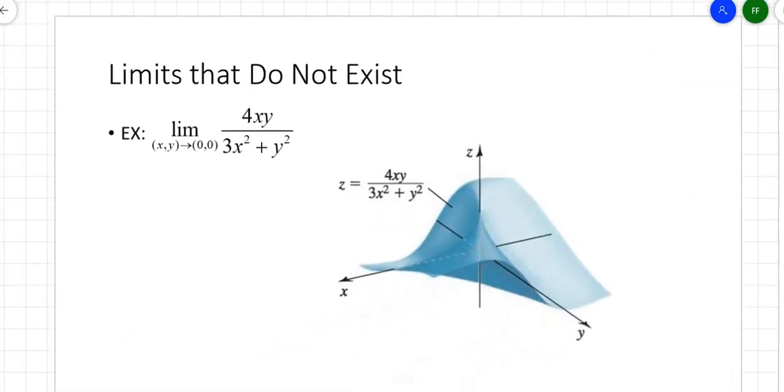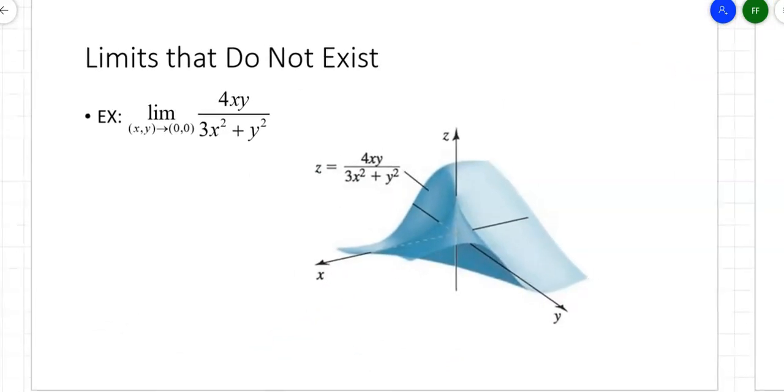What about a case like this? I got 4xy over (3x squared plus y). If I try direct substitution, then clearly I'm going to get 0 on the top and 0 on the bottom. But what does that mean? Remember in Calc 1, we were able to L'Hopital it, come up with a limit that way, but will that work here?